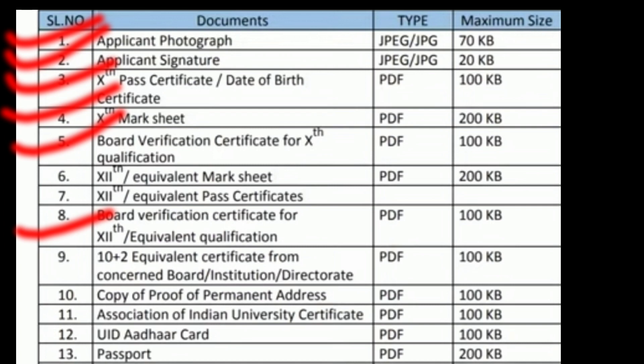The sixth document is the class 12th Mark Sheet. The seventh document is the class 12th Pass Certificate. Note that CBSE has stopped providing pass certificates, so you can use your class 12th mark sheet as the pass certificate. The ninth document is only concerned to those who gave their Physics and Chemistry exam from an open university. The tenth document is proof of permanent address — if you have an address proof, that's fine; otherwise use your Aadhar card or passport. Even if your correspondence address was different, you don't need to provide its proof — you only need to provide permanent address proof.